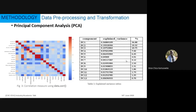Key questions before doing dimensionality reduction include: are all variables important, are all variables numeric, and do they have high relationships or variances? The benefits of applying PCA include data compression to reduce storage, faster computation time since fewer dimensions mean fewer calculations, and addressing multicollinearity to improve model performance by removing redundant features.